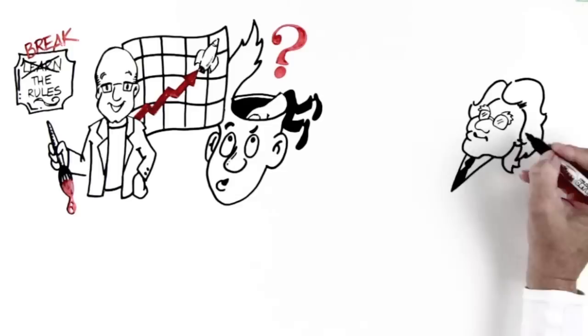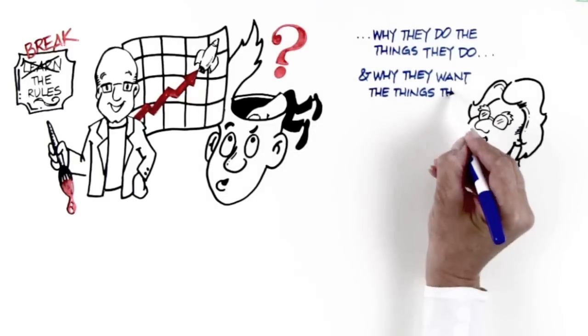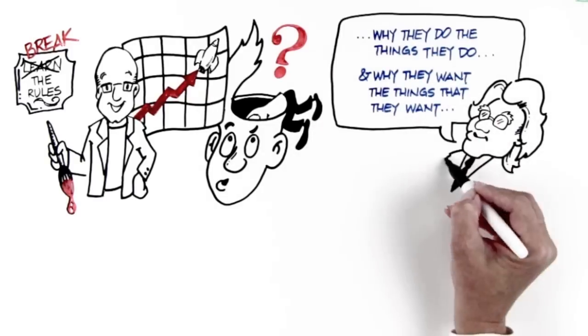But as Clotaire Rapai said in a great book called The Culture Code, most people have no idea why they do the things they do, and they also similarly have no idea why they want the things that they want.